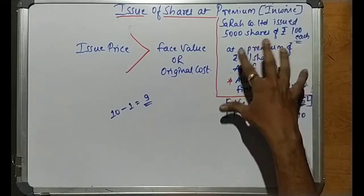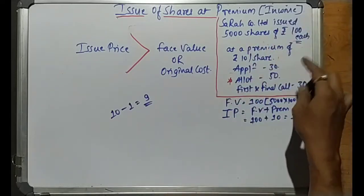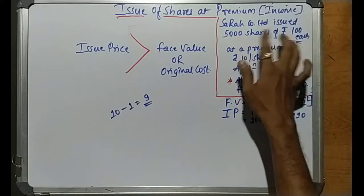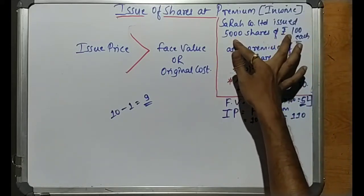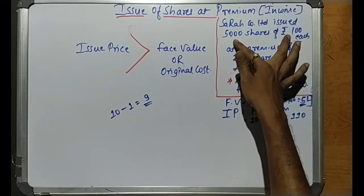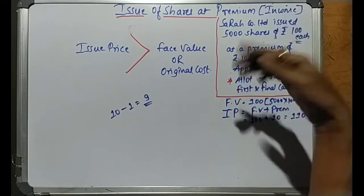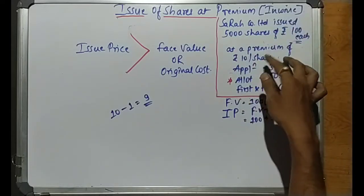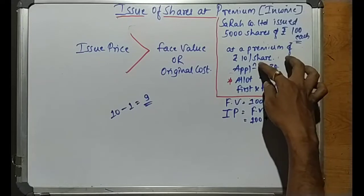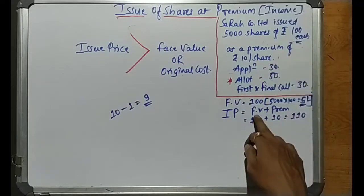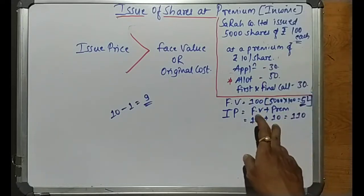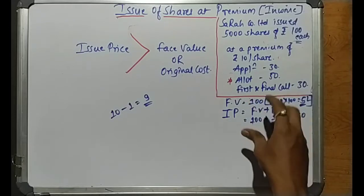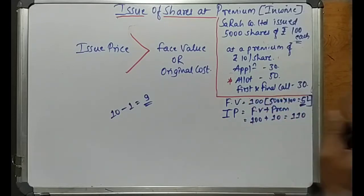So the problem is that the company has 5,000 shares of rupees 100 each. The premium amount is rupees 10 per share. So the face value is 100, the premium amount is 10, and the issue price is 110.